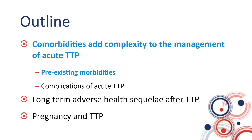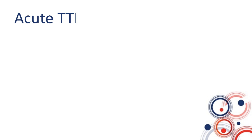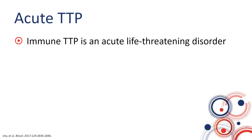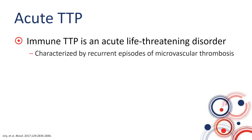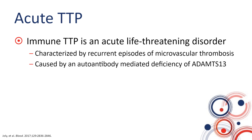First, talking about the pre-existing morbidities that we have to keep in mind while treating patients with TTP. Immune TTP is an acute life-threatening disorder characterized by recurrent episodes of microvascular thrombosis, leading to impairment of various organs. It's caused by an auto-antibody mediated deficiency of the enzyme ADAMTS13, which cleaves von Willebrand factor into smaller fragments that can circulate in the blood without causing thrombi.